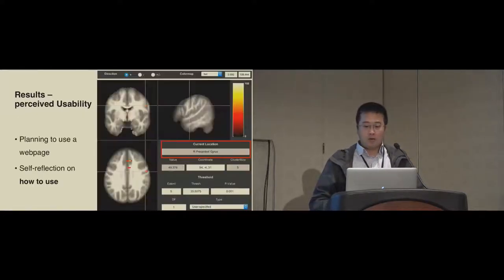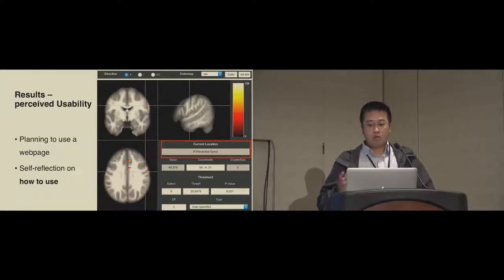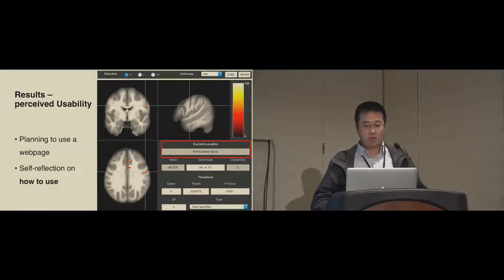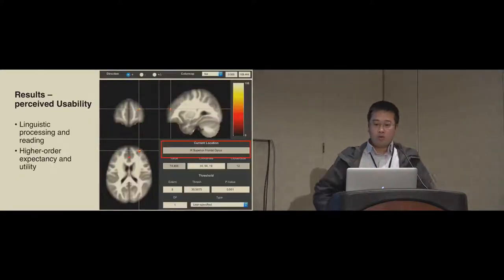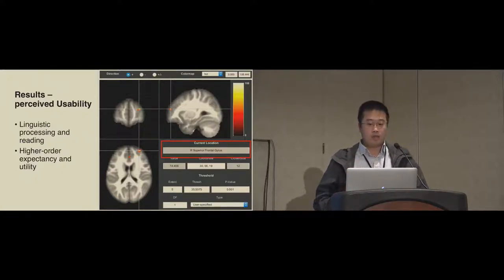Interestingly, in terms of perceived usability, we found the brain areas specific to usability were found in several pre-motor areas which are associated with planning complex movements. This result suggests that the process of planning to use a webpage and self-reflection on how the use of a webpage was stimulated when people were assessing their usability. We also found that usability was related to the activation of brain parts often related to linguistic processing and reading. In some studies, these areas have also been implicated in higher order expectancy and utility. This suggests that even if the webpage is only viewed for five seconds, users look at the quality of the headings in the webpage when perceiving usability and judging them.